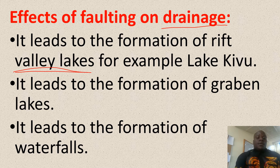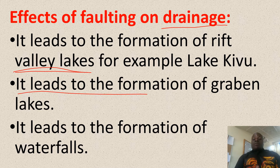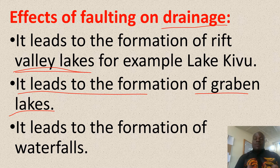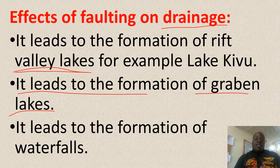Two, faulting leads to the formation of graben lakes. We saw grabens — these are depressions formed within a rift valley as a result of secondary faulting. So when they are filled with water, they also become graben lakes.